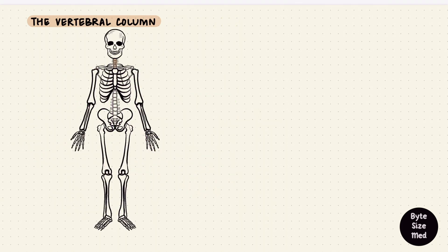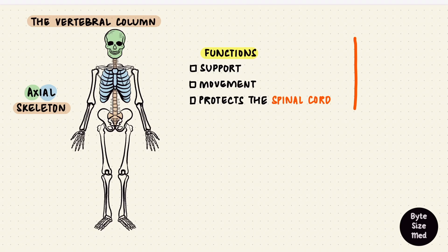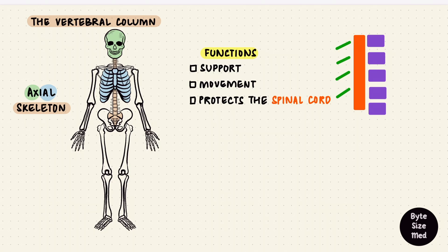This vertebral column literally forms the backbone of the body. Together with the skull and the thoracic cage, they form the axial skeleton. It's very important for support and movement, which happens by joints between the vertebrae and by the muscles and ligaments that attach to the bones. The vertebral column also protects the spinal cord, which sits in the vertebral canal. The vertebrae are stacked one on top of the other, each one has a vertebral foramen, and those foramina unite to form a vertebral canal.